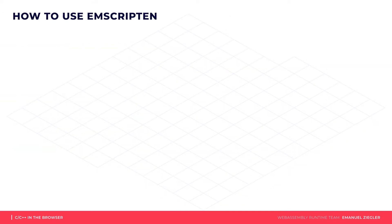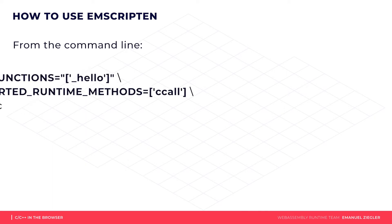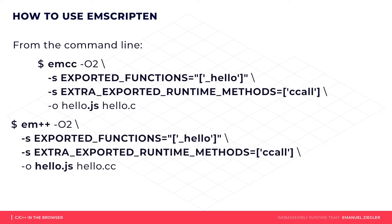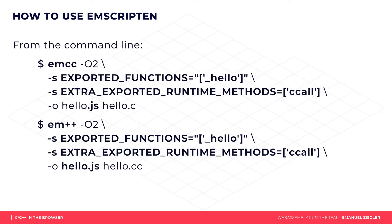After Emscripten is installed, you can compile your program by simply replacing the C compiler with emcc and the C++ compiler with em++. You will want to choose a .js ending for your files, and a .wasm file will be automatically created alongside. You will likely want to add some WASM-specific parameters as well that allow you to export functions to JavaScript and make it easier to consume them.